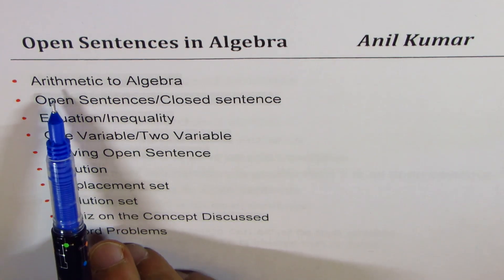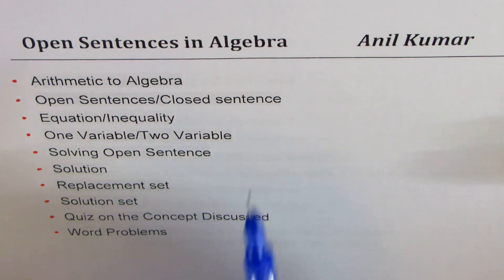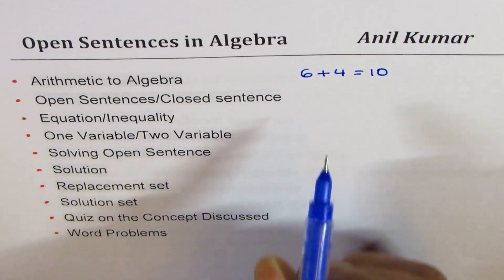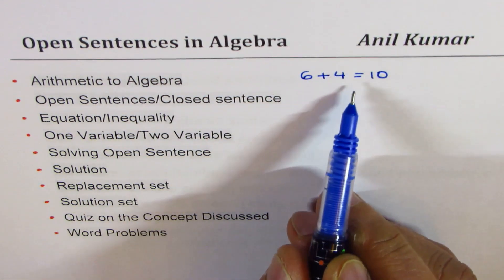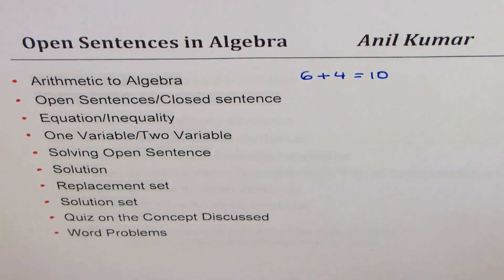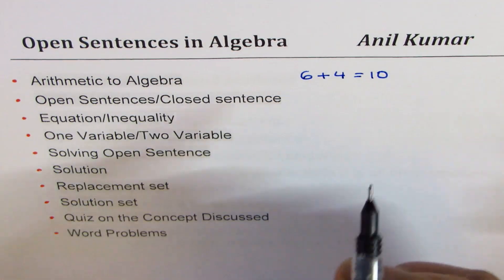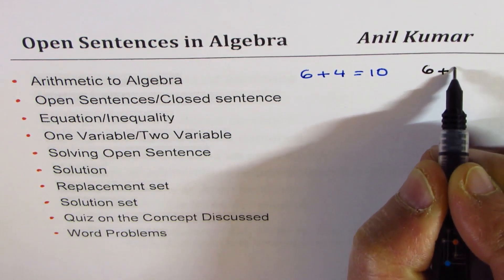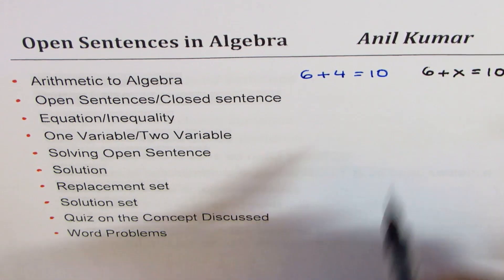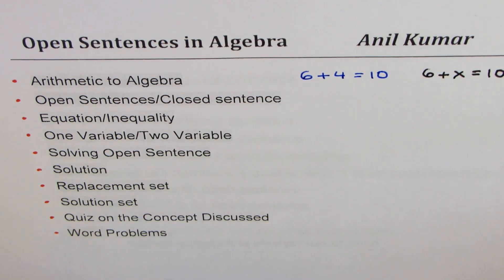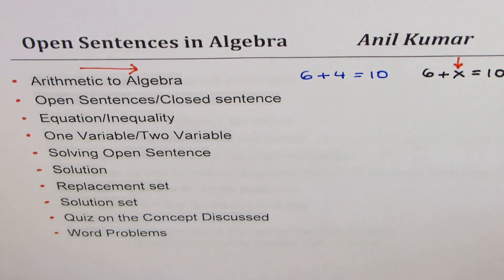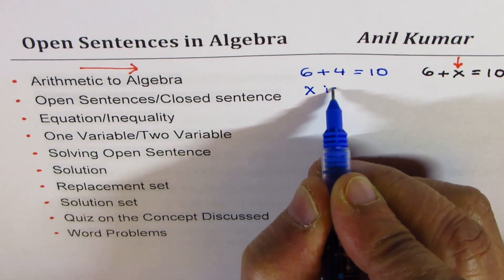Let me begin with where arithmetic ends and algebra begins. A simple example: 6 plus 4 equals 10 — this is arithmetic. All numbers, operators, and the equal sign — that's arithmetic. On the other hand, if I change one of these numbers to a variable or symbol, like writing 6 plus x equals 10, this small change is what is called algebra. So x here is any number.